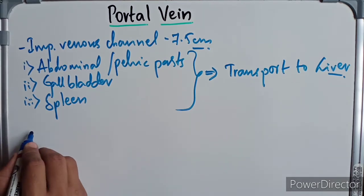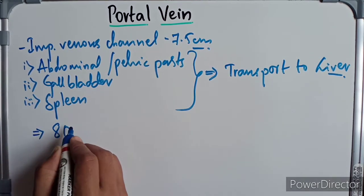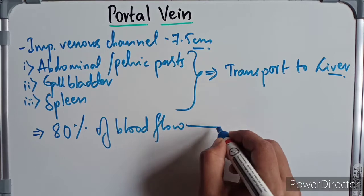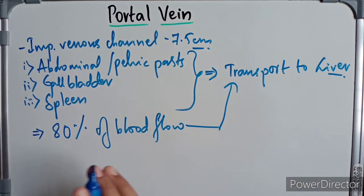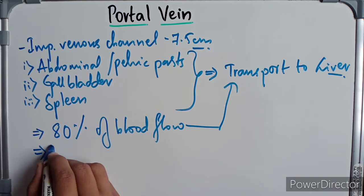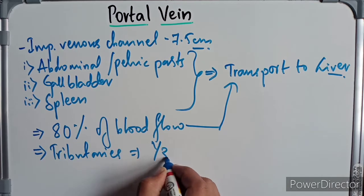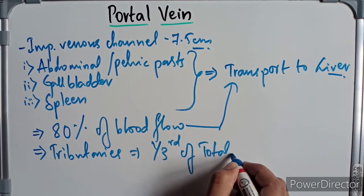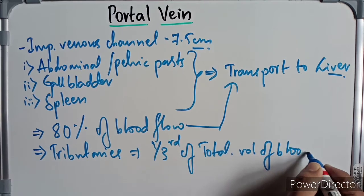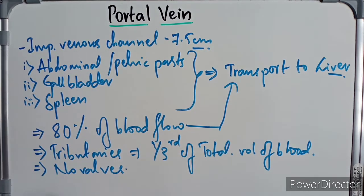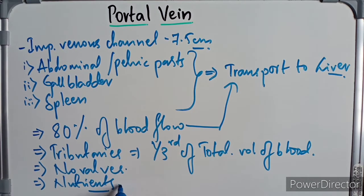The portal vein provides about eighty percent of the blood flow through the liver. Its tributaries will contain up to one-third of the total volume of blood. The portal vein and its tributaries contain no valves, and they transport the products of digestion and nutrients to the liver.